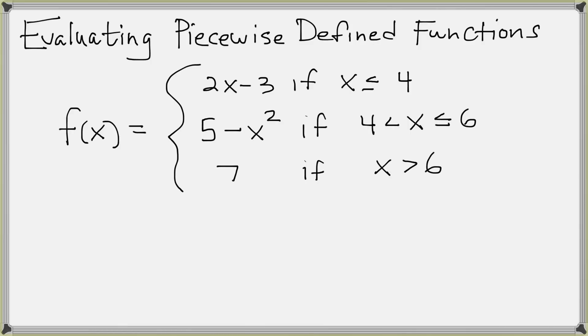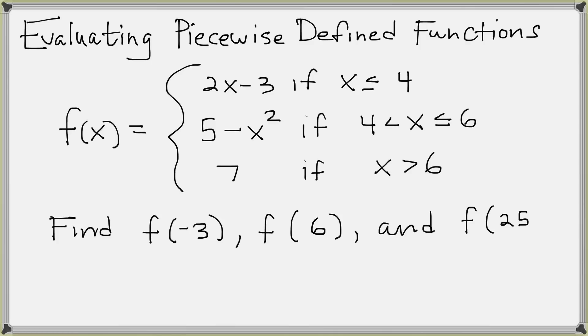To work a few specific examples, let's say we wanted to find f of negative 3, f of 6, and f of 25 — in other words, when you plug those numbers into this function, what is the output? The basic procedure for f of negative 3 is to go over to the conditions and look at them one by one.